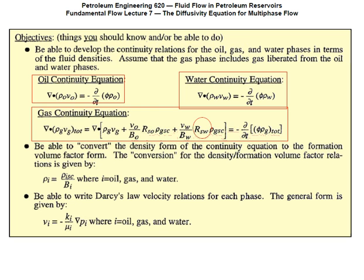The VOs, VGs, and VWs are velocities of oil, gas, and water, and they're represented by Darcy's law. Density is represented in terms of formation volume factor — that's just a convention we're using.